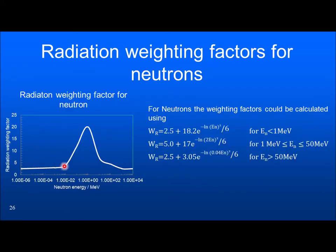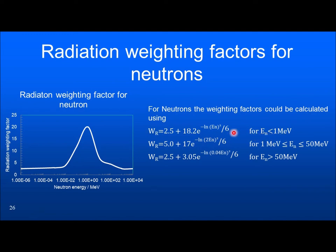The radiation weighting factor for neutron varies with energy. For low-energy neutrons it is lower than 5. Around 0.01 to 1 MeV it rises significantly, reaching a peak of about 20, then drops. For energies less than 1 MeV, for 1–50 MeV, and for greater than 50 MeV, there are separate empirical relationships. So the radiation weighting factor for neutron changes considerably with energy and is very different from X and gamma radiation.